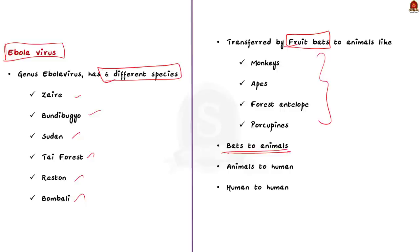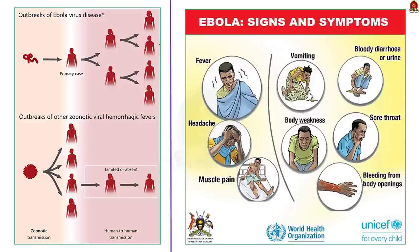When animals like monkeys, apes, forest antelopes or porcupines come into contact with these bats in the wild forest, they are also infected with the Ebola virus. When these infected animals come into contact with humans, the Ebola virus is introduced into humans. Humans infected with Ebola can then transmit the infection to other humans through direct contact. When a healthy person comes in contact with an infected person, or touches an object contaminated by an infected person, he or she is likely to get infected. The incubation period for Ebola virus — that is, the time interval between infection and onset of symptoms — is 2 to 21 days.